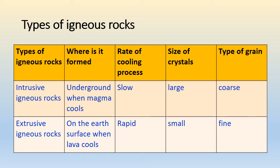Intrusive igneous rocks form when magma cools slowly underground. This forms large crystals, giving the rock a coarse grain texture. Extrusive igneous rocks form due to rapid cooling of magma on the earth's surface, forming small crystals with a fine grain texture.